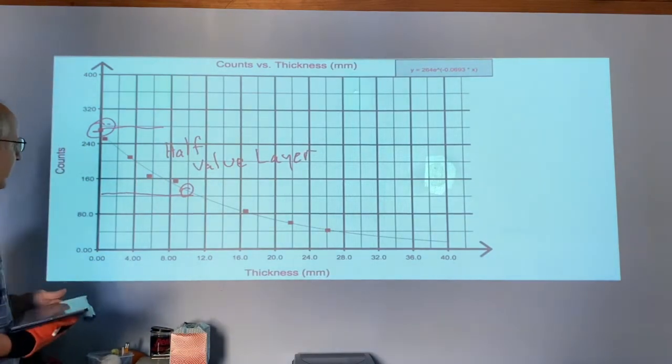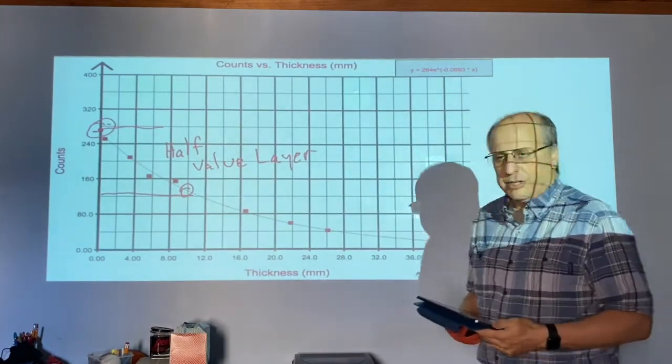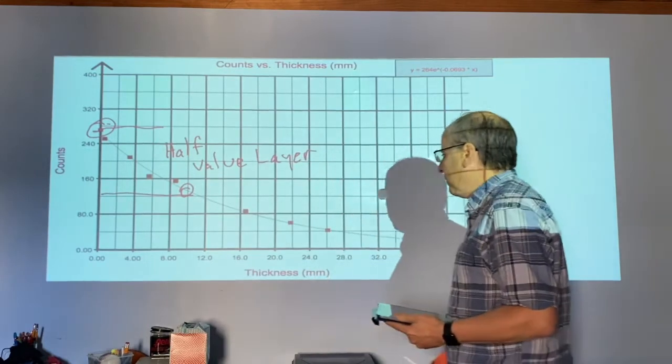That's the distance, the thickness required to knock out half the radiation. Notice it's around 10 millimeters for this thing.